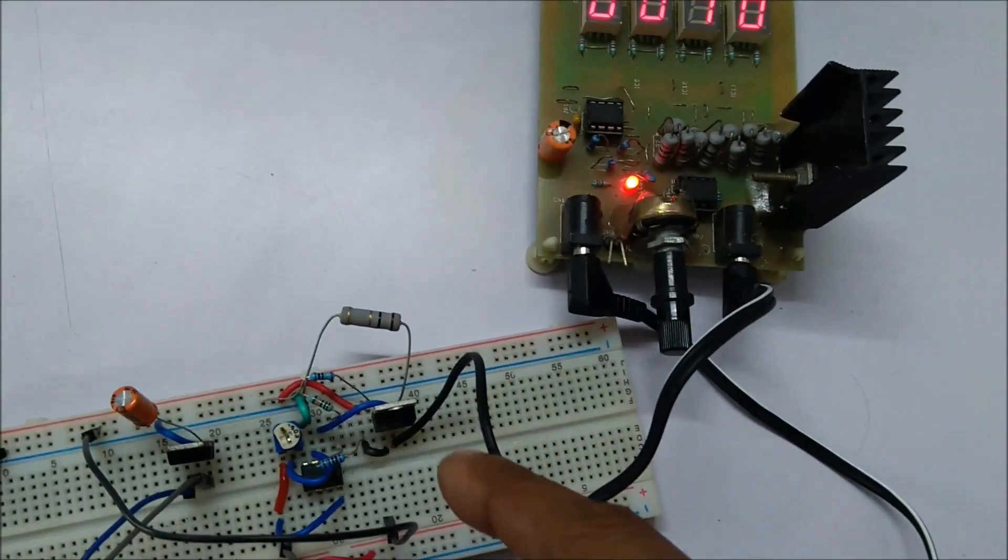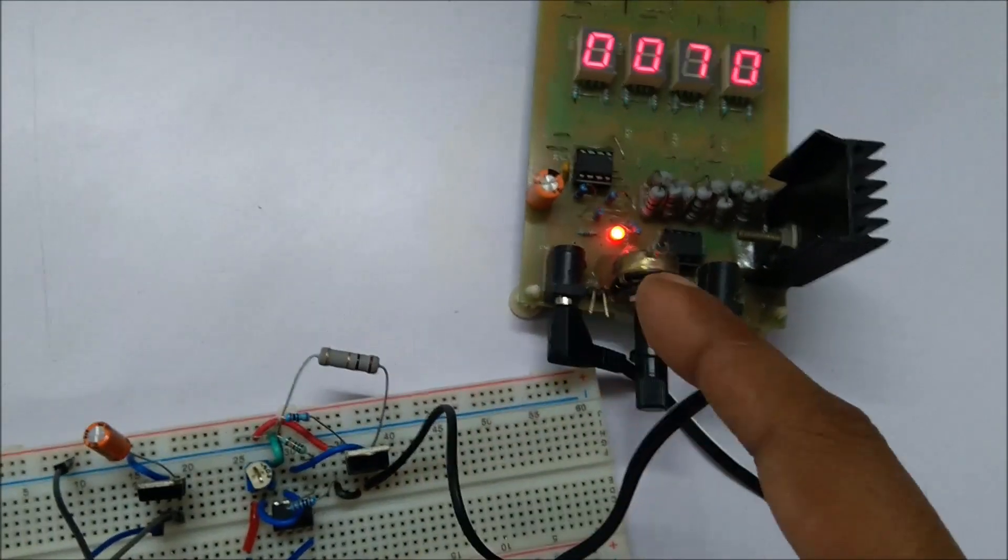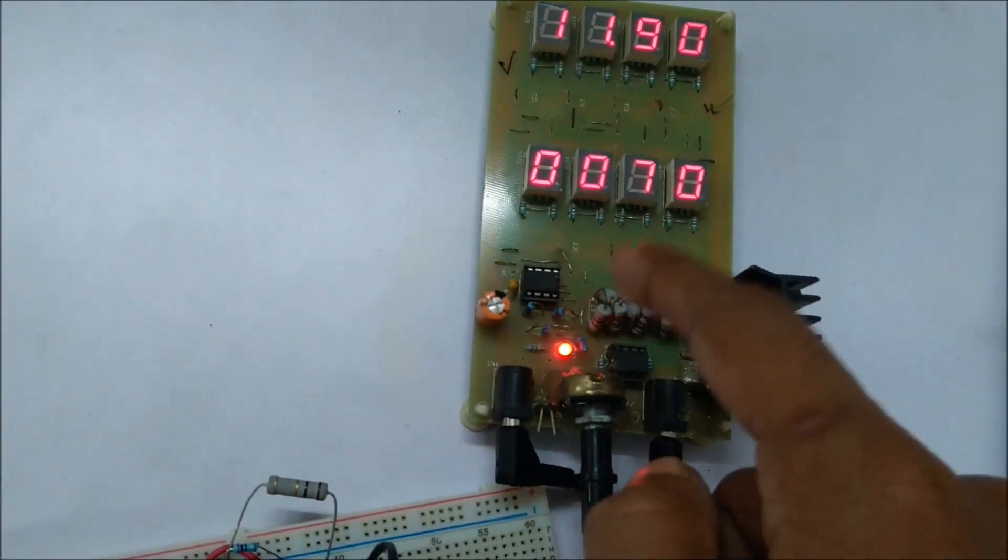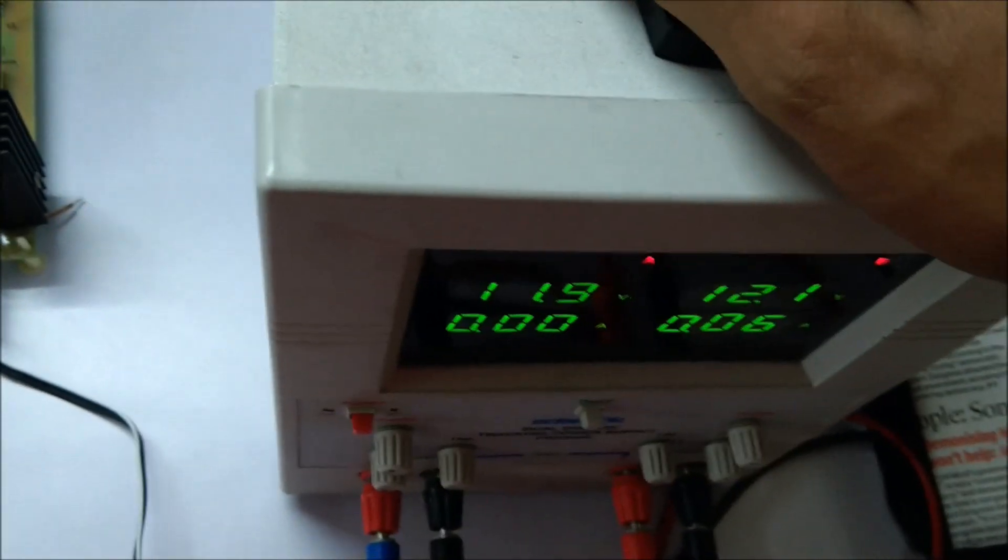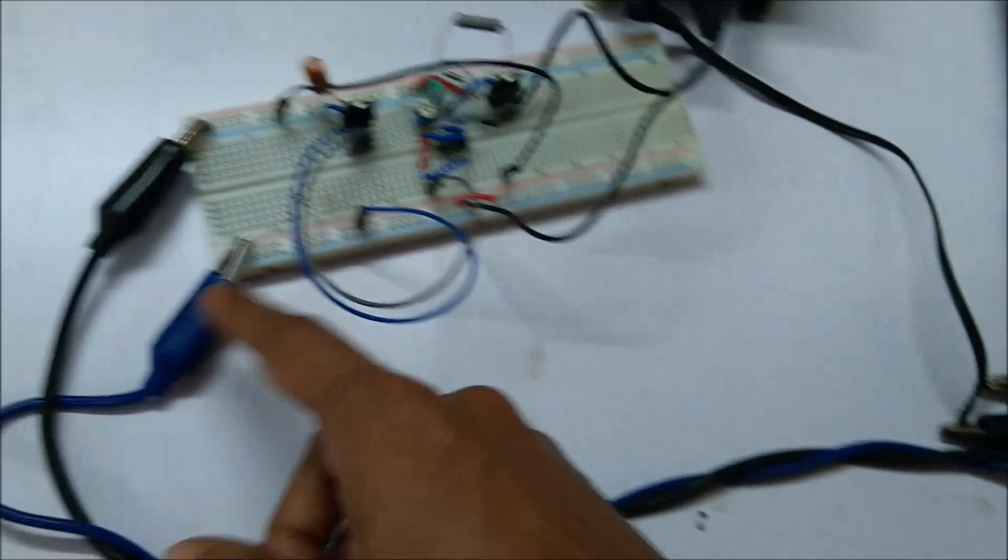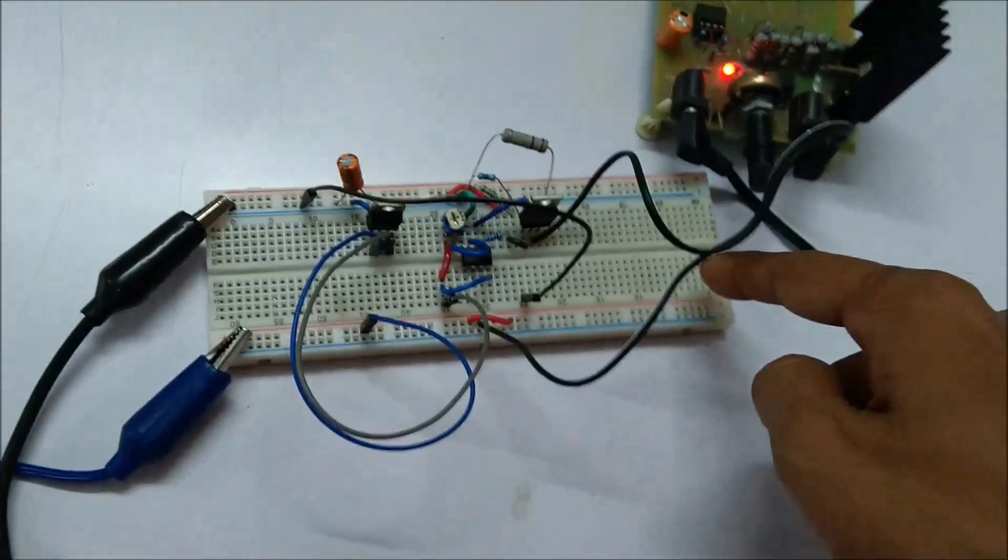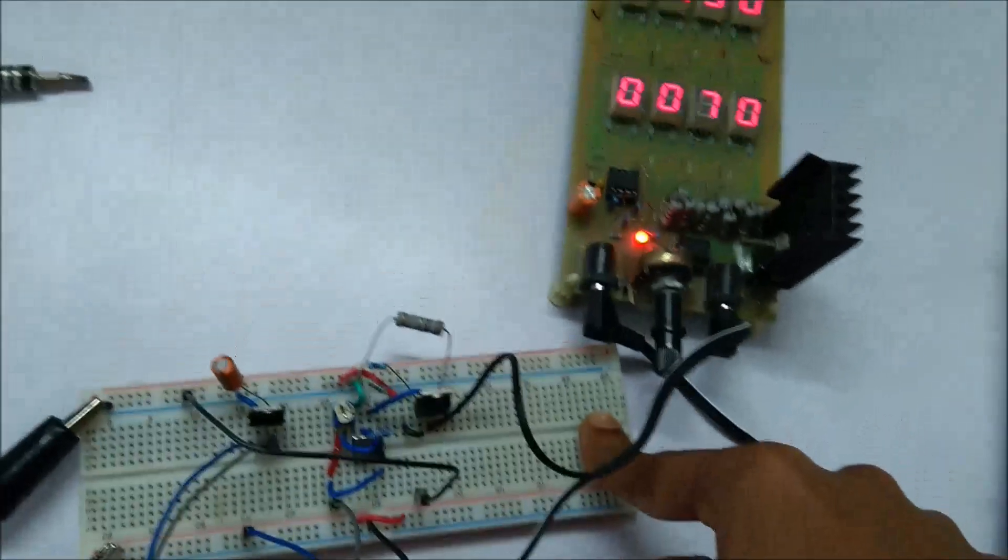Here is the load which is connected across this MOSFET. This load is powered using this variable bench power supply, and the first channel is also connected to the actual circuit. Let's see how it is working.